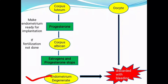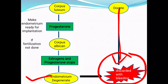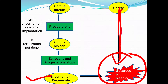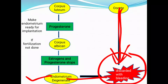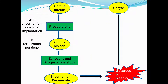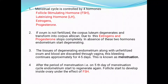The degenerated endometrium is no longer required by the body. So this degenerated endometrium, along with the unfertilized oocyte, is discarded from the body with bleeding. This bleeding phase in the menstrual cycle is called the menstruation period. The content of menstruation is: blood, the unfertilized oocyte, and the degenerated endometrium.